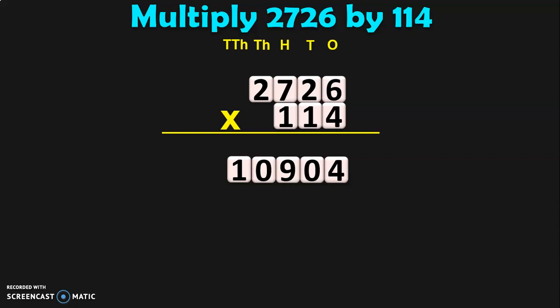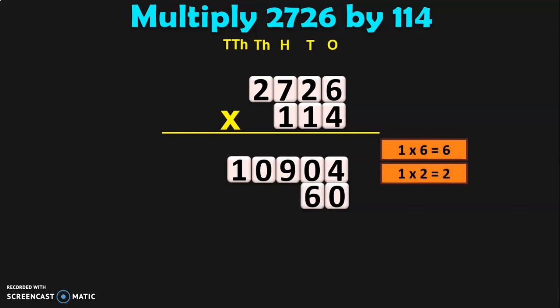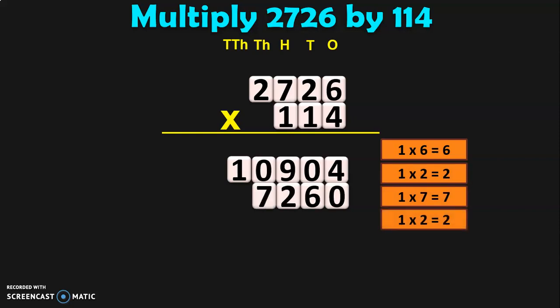The next step is to multiply 2726 by 10, because the 1 is in the 10s place. So, what will you do? First, you write down the 0 in the 1s place. Next, as usual, begin multiplication of 1 with the other numbers in their respective place values. So, 1 into 6 is 6. Next, 1 into 2 is 2. Then, 1 into 7 is 7, and 1 into 2 is 2 again.